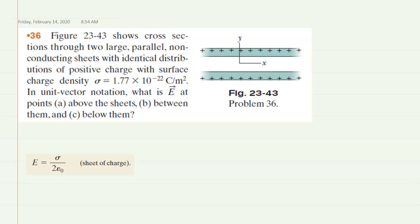To determine the electric fields in this question, it's helpful to remember that when you have large conducting sheets, the electric field as derived by Gauss's law is equal to the surface charge density divided by 2 times the constant epsilon. The question gives you the surface charge density, so we'll be using that value to calculate the electric field.